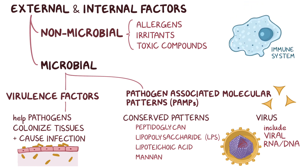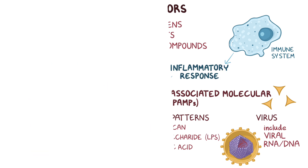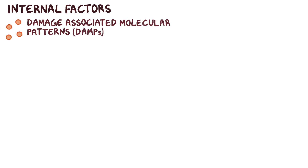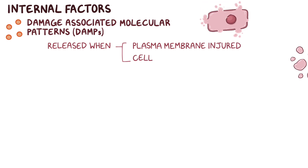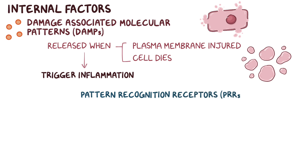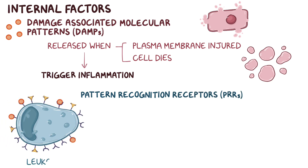Our immune system recognizes virulence factors and PAMPs as foreign substances and can trigger an inflammatory response against them. In terms of internal factors, there is an endogenous equivalent to PAMPs called damage-associated molecular patterns, or DAMPs. DAMPs are intracellular proteins that get released when a cell's plasma membrane is injured or when a cell dies, signaling serious cell damage and triggering inflammation. PAMPs and DAMPs are recognized by pattern recognition receptors, or PRRs.